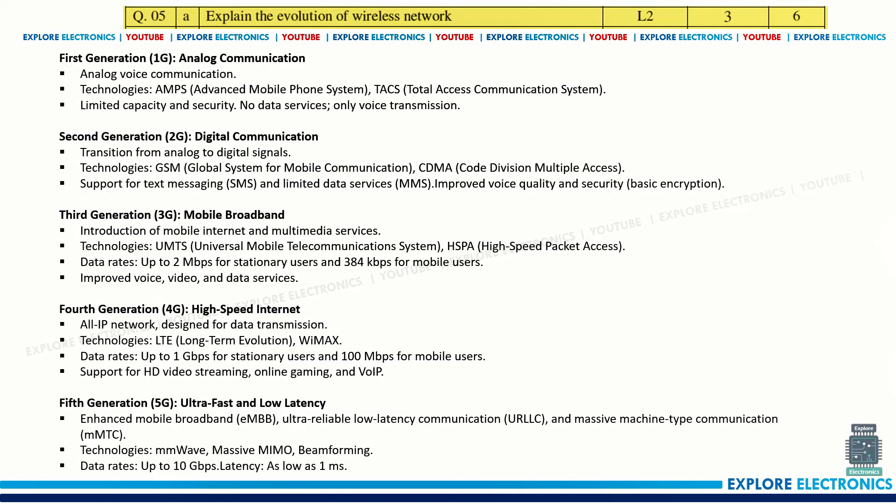Question number five: explain the evolution of wireless networks — 1G, 2G, 3G, 4G, 5G — and you can also include 6G. In 1G it is only voice communication with no data or digital features; AMPS is one example. In 2G, GSM comes into existence. In 3G, UMTS is introduced with data rates supporting voice, audio, video, and multimedia. Then 4G and 5G follow. You need to explain all these with brief explanation.